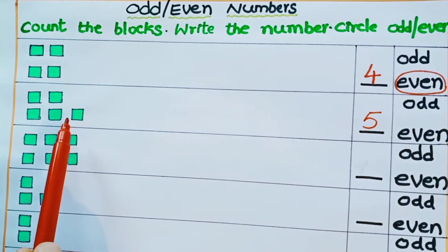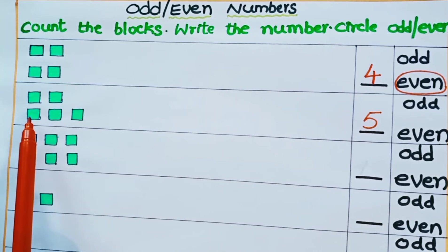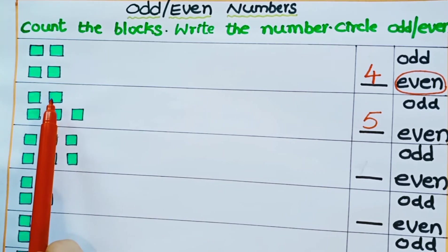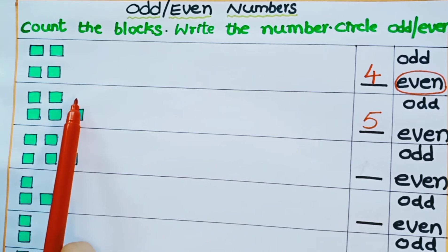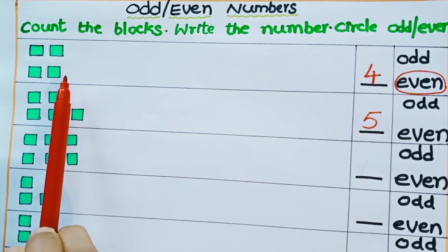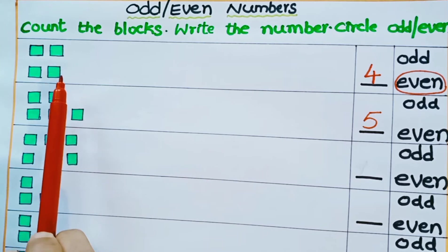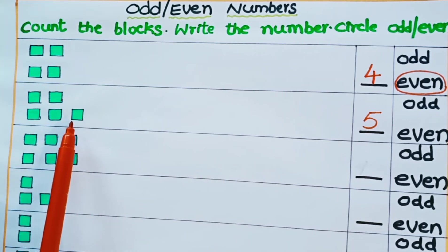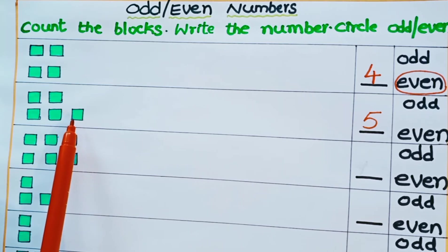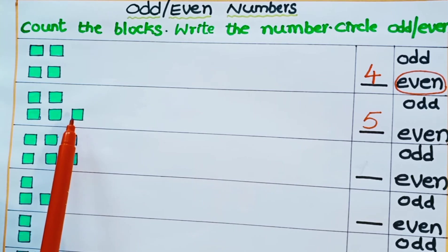Why is it an odd number? Because 2 blocks can form a pair — this is one pair, second pair — and here we have an unpaired block. In this number 5, we have an unpaired block. It is an unpaired block. So if there is an unpaired object then it is an odd number. So 5 is an odd number. Let us circle odd.